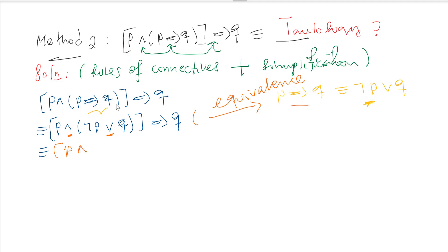This is equivalence rule. We will distribute and through or. Distributive property. That means we have [p ∧ ¬p] or [p ∧ q] close the bracket, and we have also implies q.